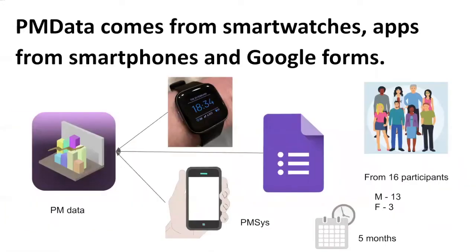How did we collect this PM data dataset? This data comes from three different sources. The first source is from Fitbit Versa 2 smartwatch wristbands. The second source is the PMC's Spot login smartphone application, and the third one is Google Forms. For this dataset, we collected data from 16 participants over a 5-month period.